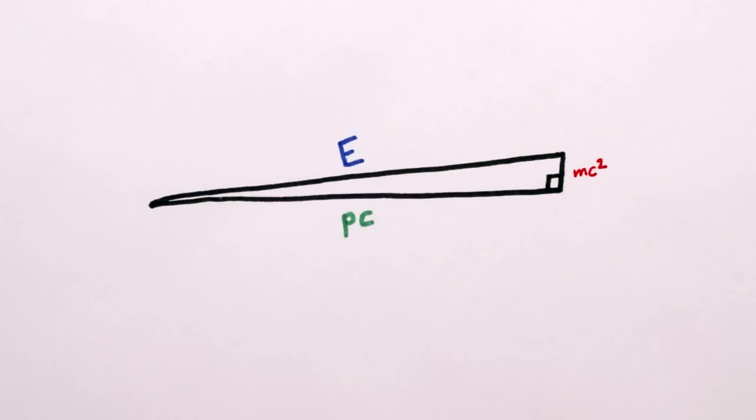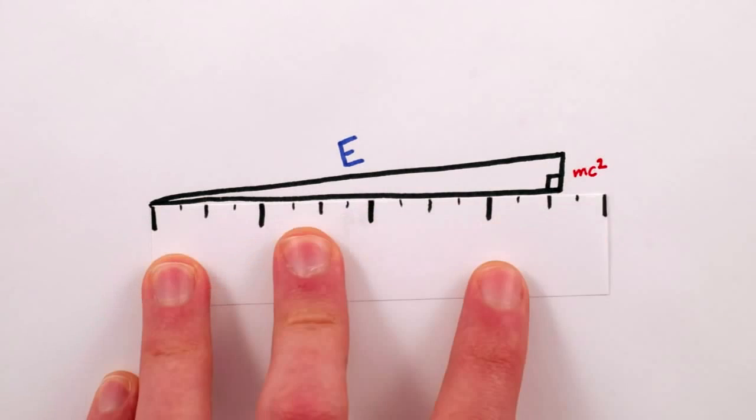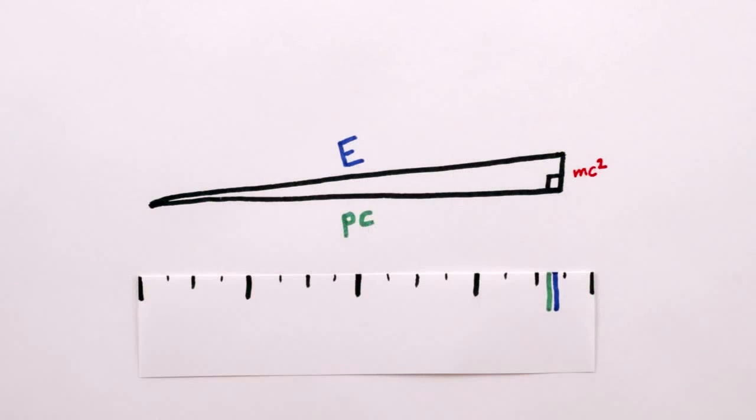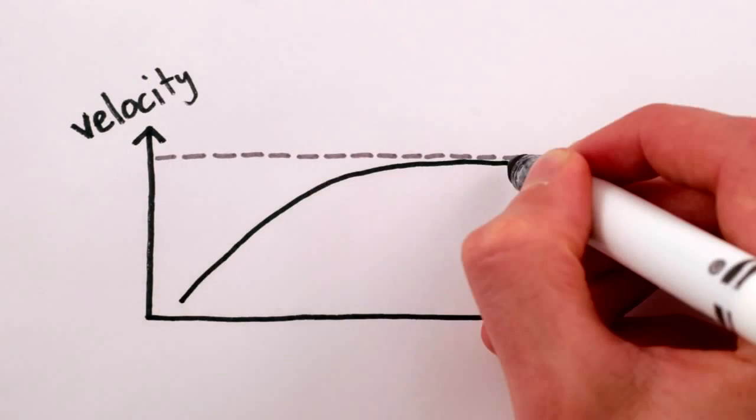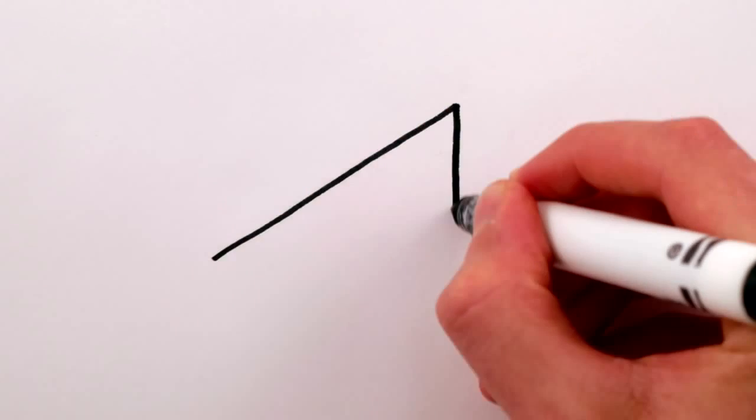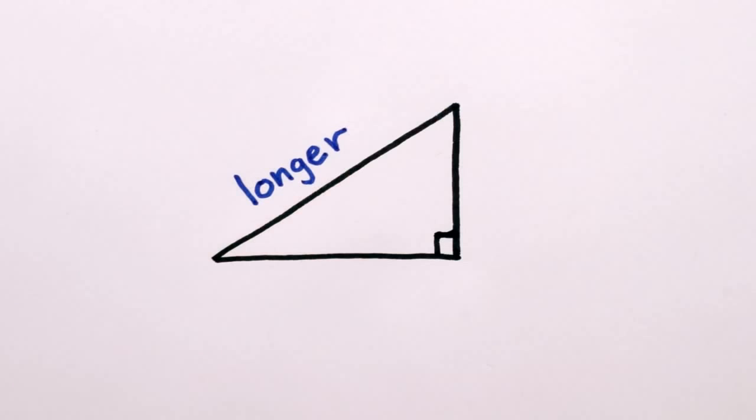But because of that tiny little bit of mass, the momentum side of the triangle will always be a little bit smaller than the energy side. No matter how hard you try to increase your momentum, it never quite gets to the point where p times c equals your energy, and thus your velocity can never quite reach the speed of light, all because the hypotenuse of a right triangle is longer than its legs.